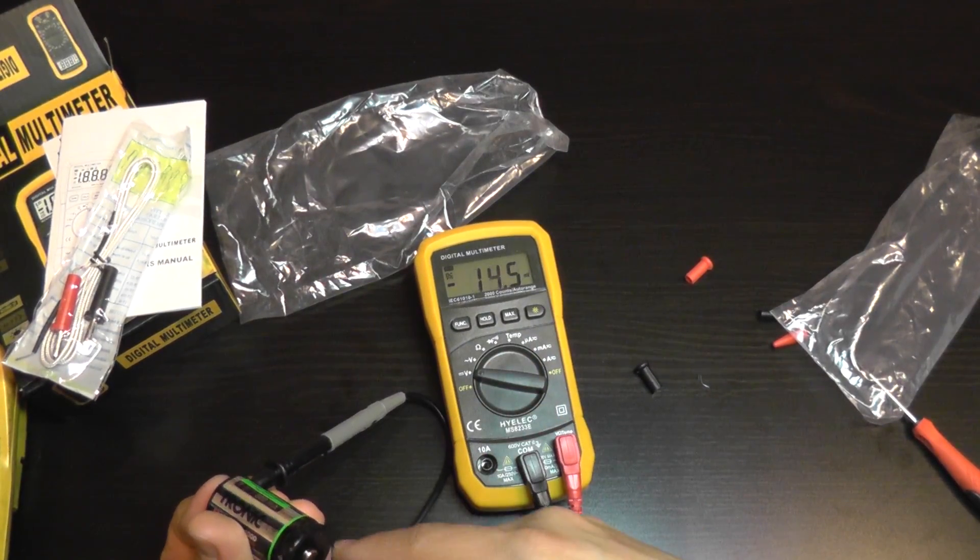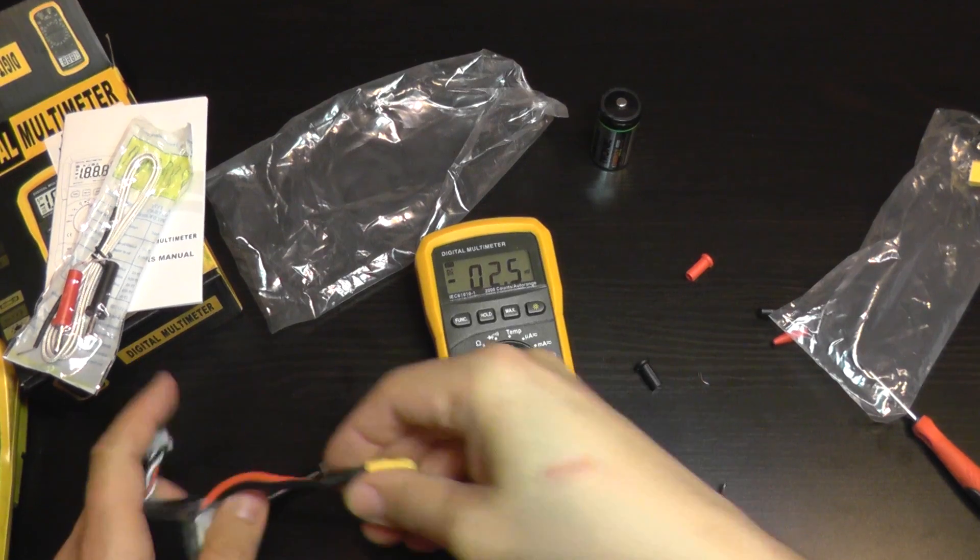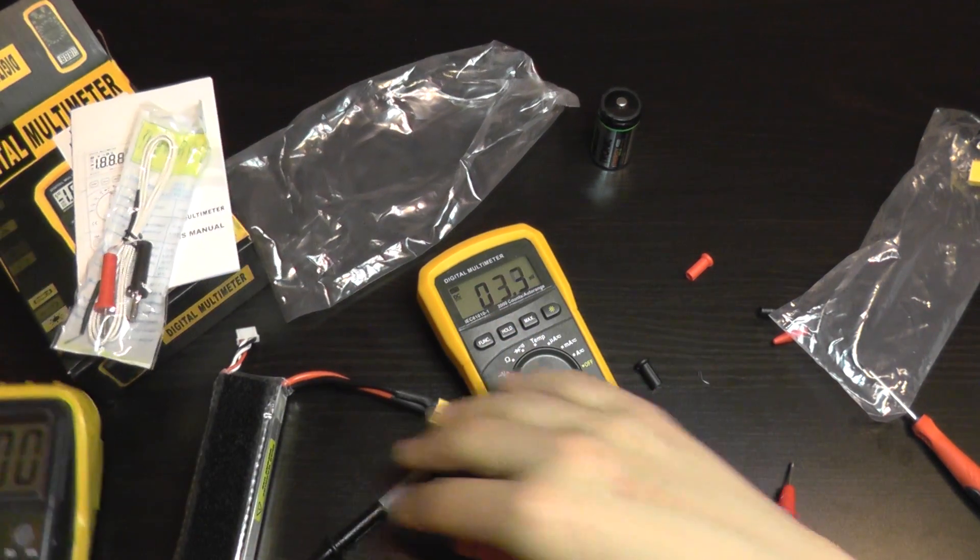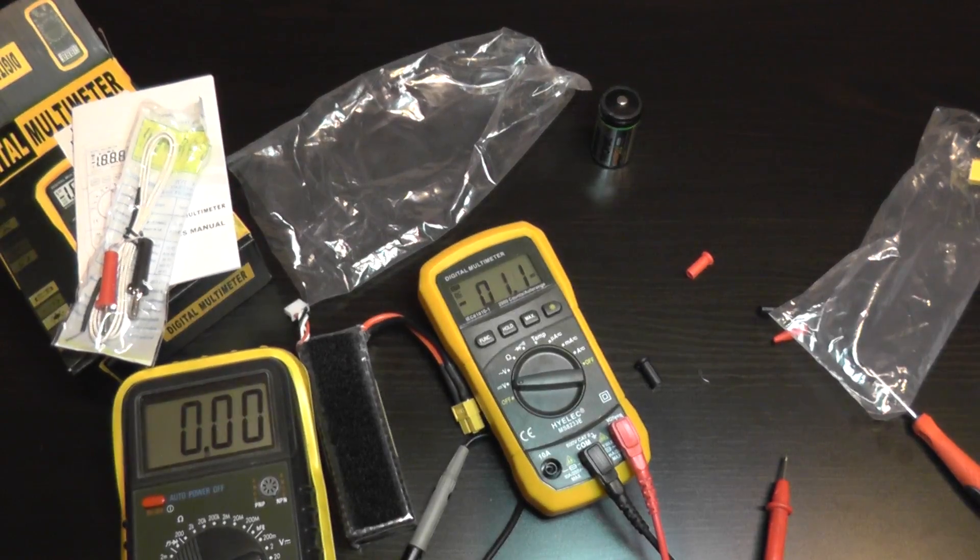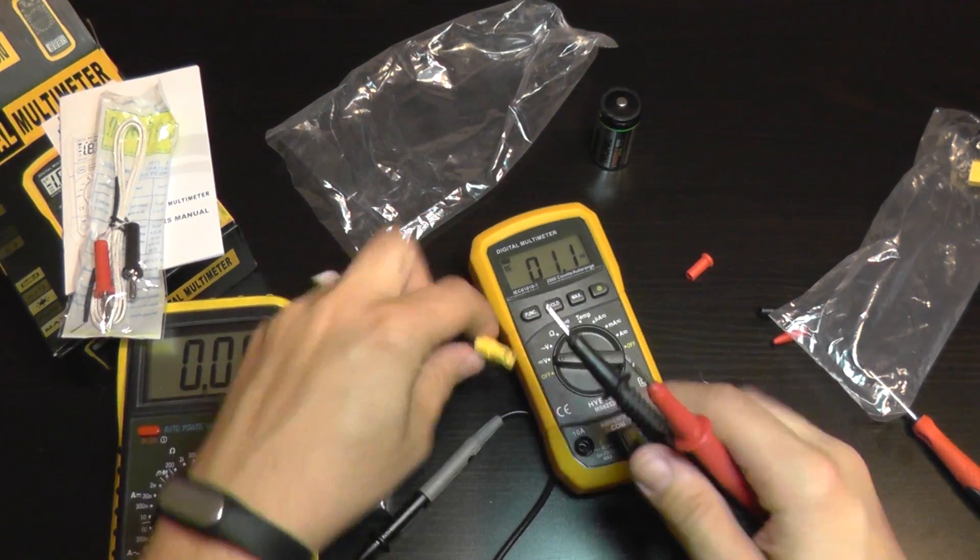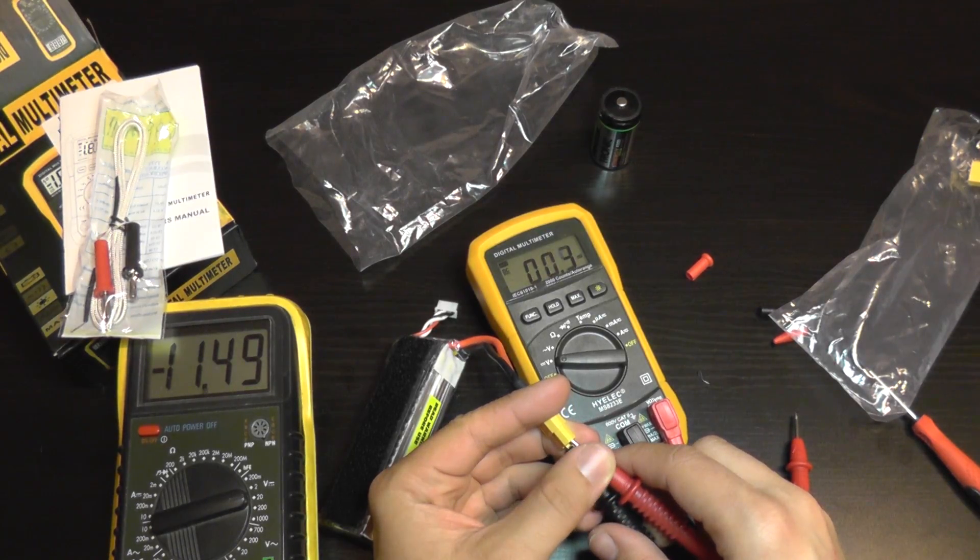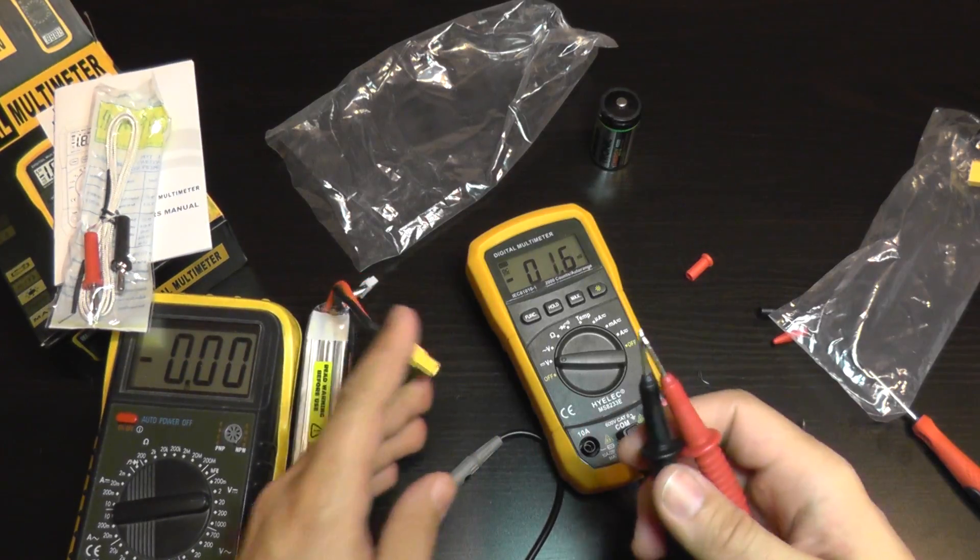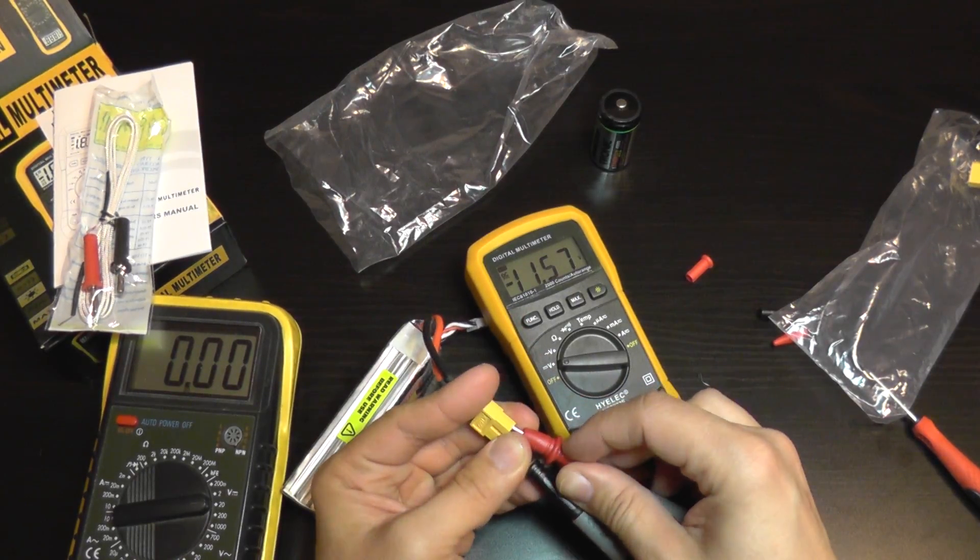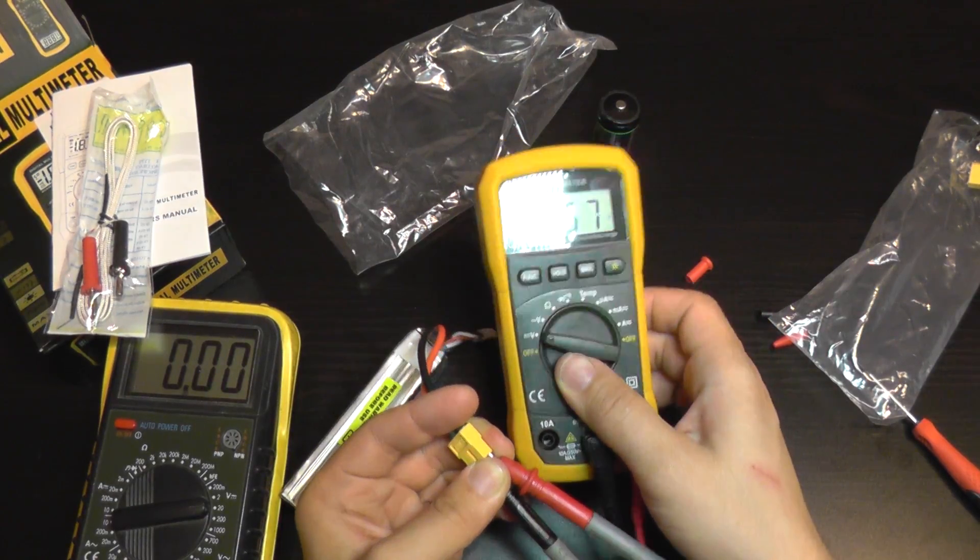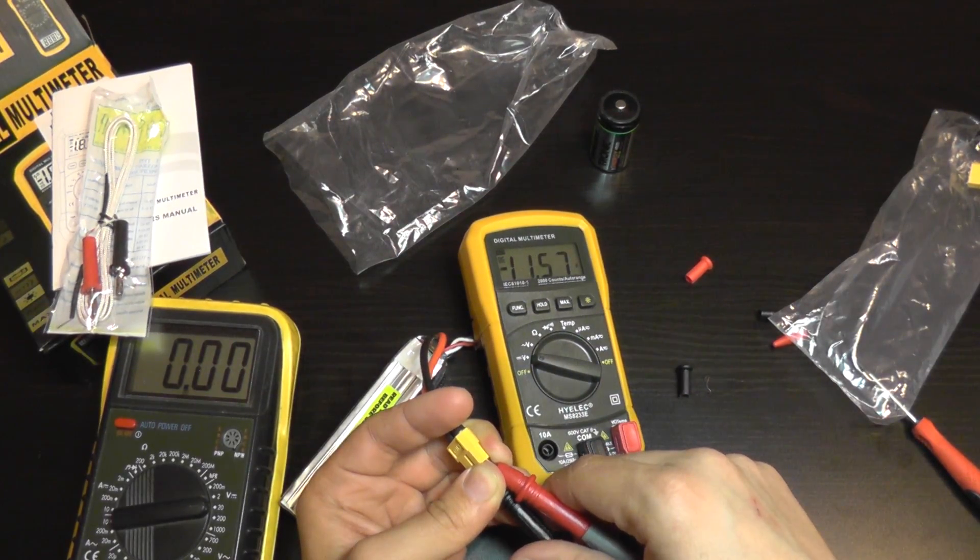What happens when I increase the voltage? I'm going to move on to a bigger battery like this one. This has over 10 volts. On this device, I'm going to use the 20-volt scale. If I measure the battery, it's 11.49. On this device, it's 11.57. It shows a greater voltage.